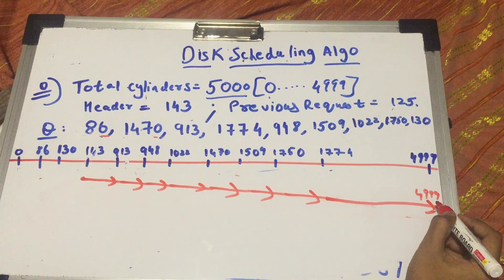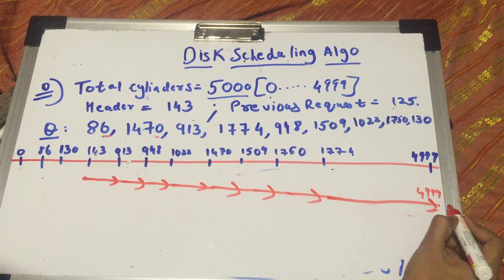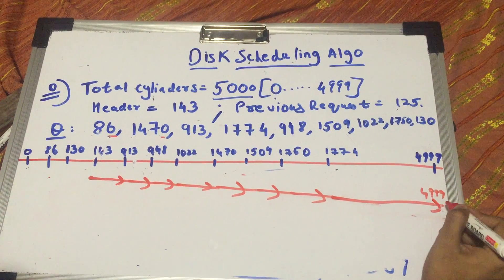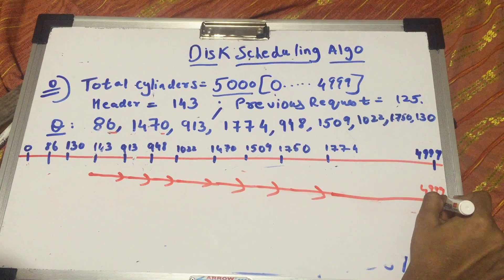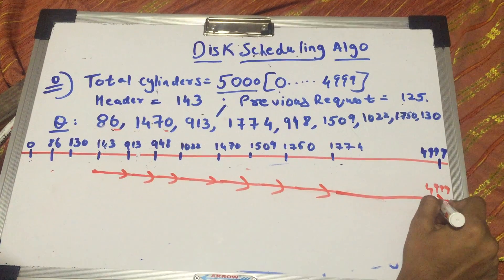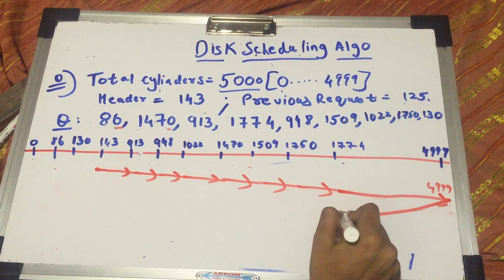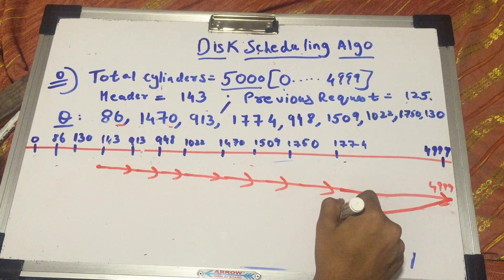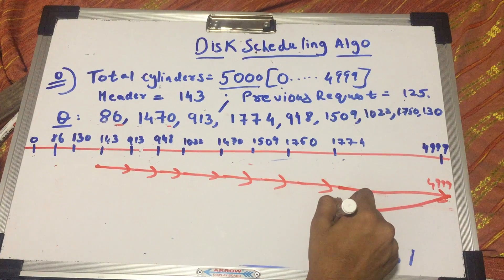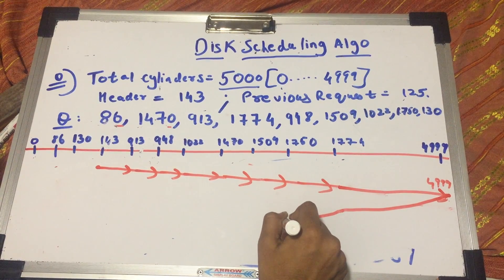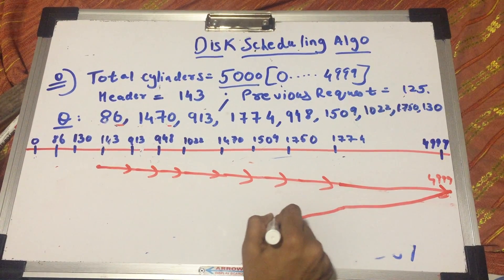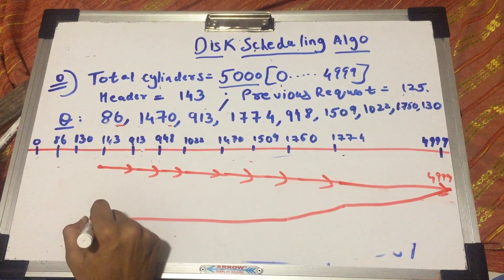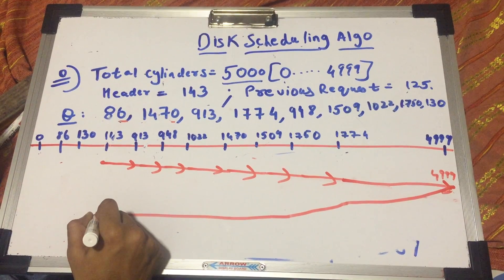Just remember that you have to go to the extremes before you can reverse your direction. Now, while reversing my direction, I'll pick up on my way whatever requests are left. I check 1774 has already been seeked, 1750 has also already been seeked. In a similar way, when I reach up to 143, I realize that even 143, that's the header.